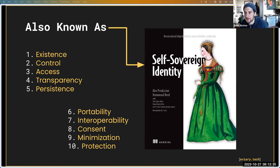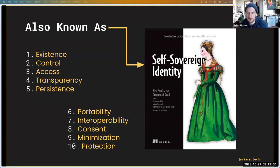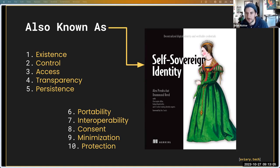Another principle is transparency — the machines, algorithms, and computers that serve us need to be transparent; we need to know how they're processing our data and what they're doing with it. Identity should also be long-lived: as long as I can still prove control, my identity should be valid. Another principle is portability — the ability to move my digital identity from one wallet or application into another, avoiding being locked into a single provider.